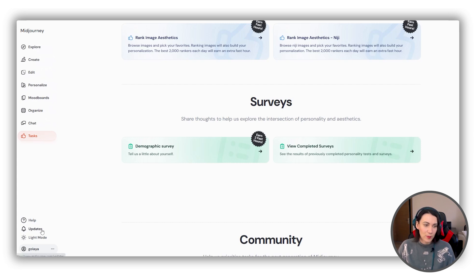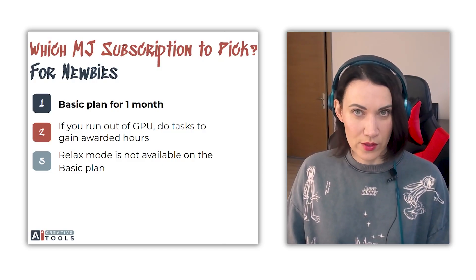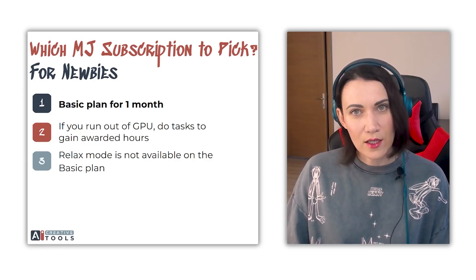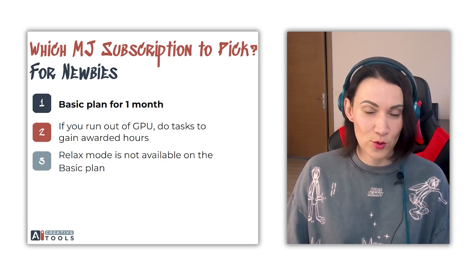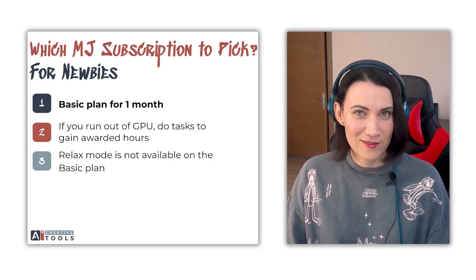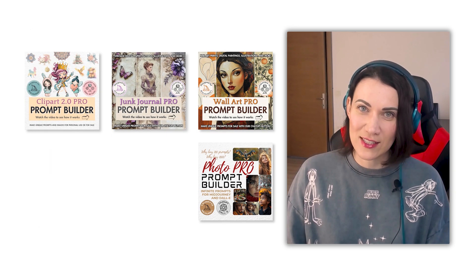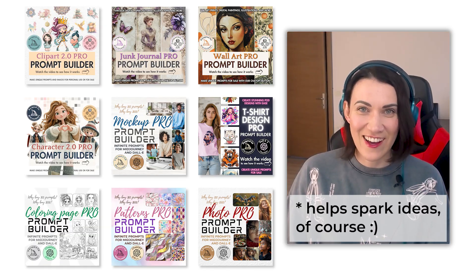Also keep an eye on the Updates section — sometimes they announce temporary events or campaigns with bonus GPU rewards. For newbies, if you're just testing MidJourney or not sure if you'll stick with it, start with the Basic plan for one month. When you run out of GPU time, do ranking tasks to earn free generations. And if you struggle to write prompts, try out our Prompt Builders — beginner-friendly Google Sheet tools with dropdowns that help you learn prompting, avoid wasting GPU time on blind experiments, and spark ideas.